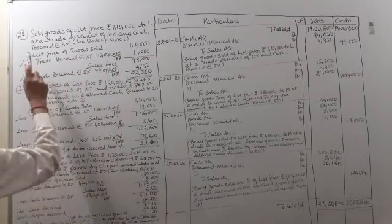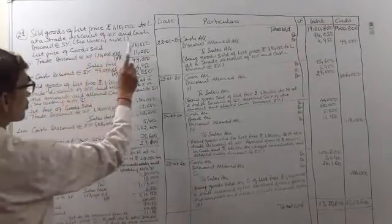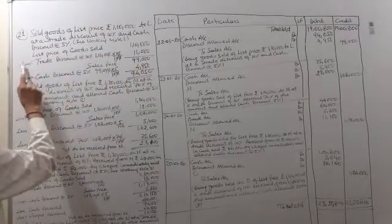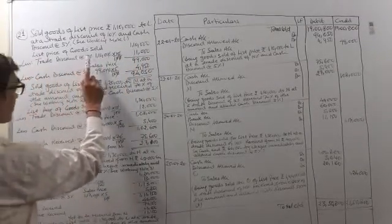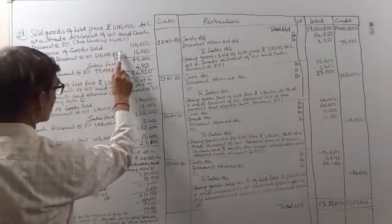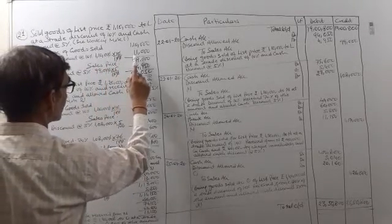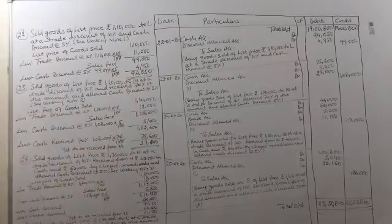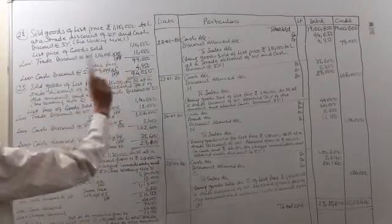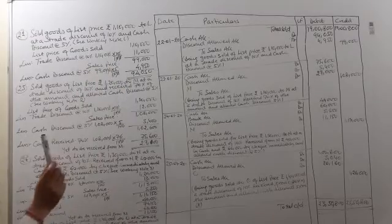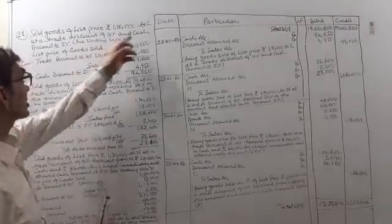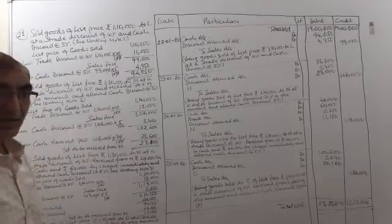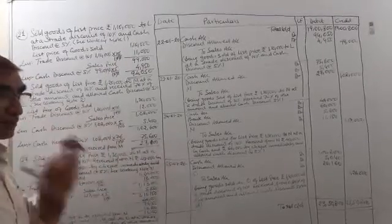In working note 1, the list price of goods sold was 1,10,000. Less trade discount at the rate 10%: 1,10,000 into 10 by 100 equals 11,000. So the balance is 99,000, which is the sales price. It is given at a cash discount of 5%, meaning everything was paid in cash.